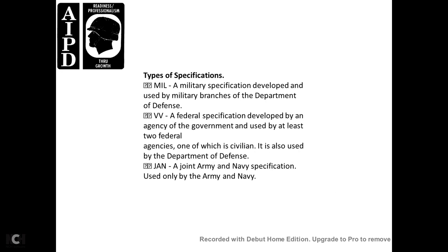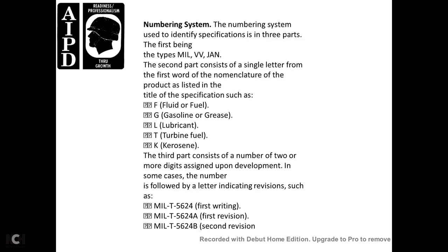Types of specifications include: Military (MIL) — developed for and used by the military branch of the Department of Defense; Federal (FF or VV) — developed for use by at least two federal agencies, one of which is civilian and one the Department of Defense; and JAN (Joint Army-Navy) — used only by the Army and Navy.